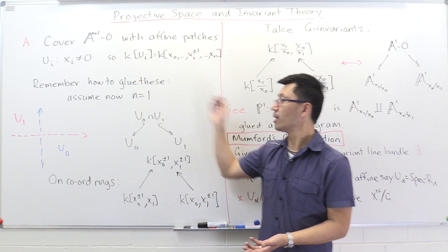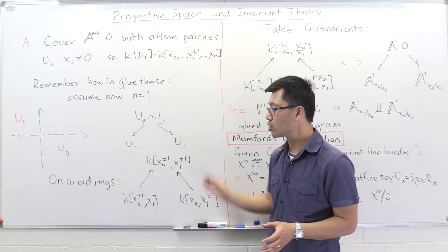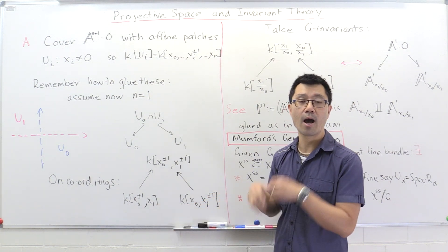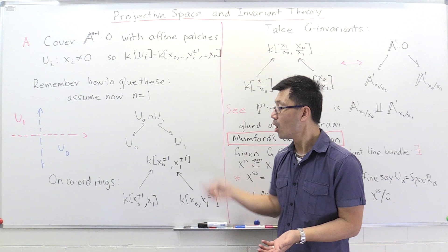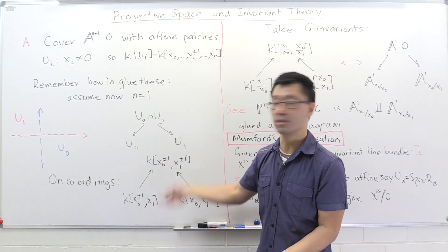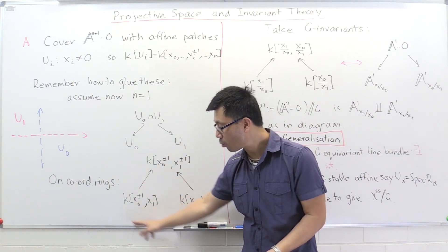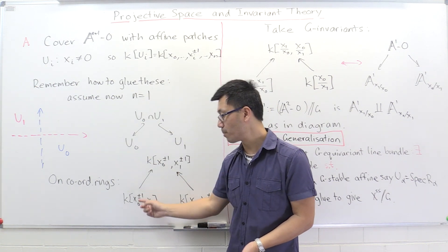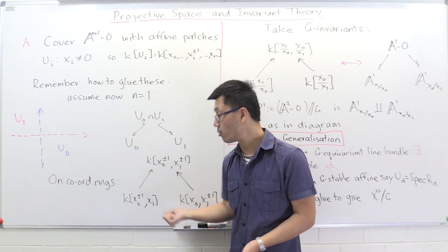Now that we have all these affine varieties, we can apply geometric invariant theory: to take quotients on the dual algebraic side, we look at invariants. So let's take invariants of everything. The group scales all variables, so the invariants are precisely the elements of degree zero.